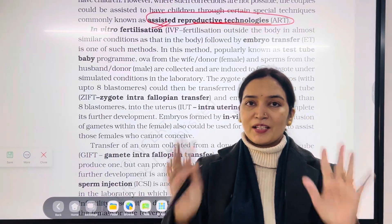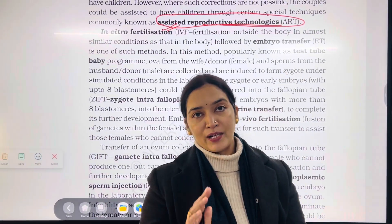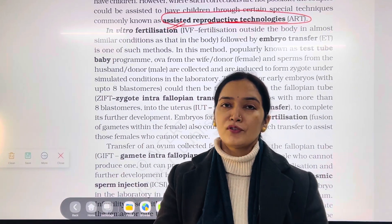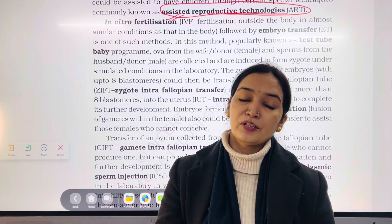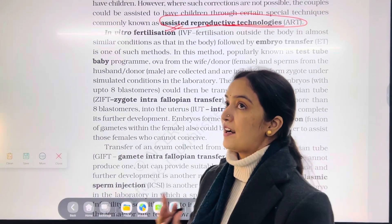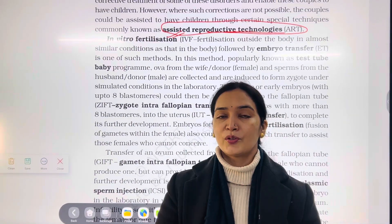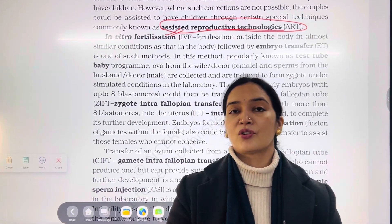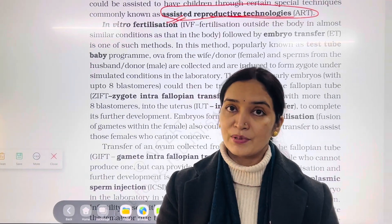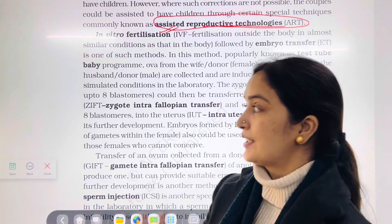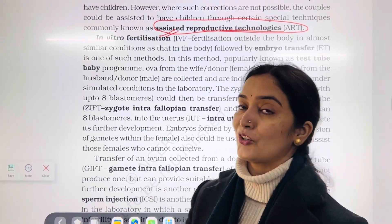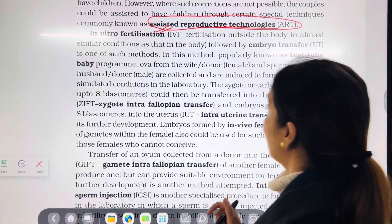Hello students, prepare for our 12th Bio Board exam. There are some full forms that come from Unit 1, Reproduction. Assisted Reproductive Technologies — all these techniques are a boon for childless couples. What are these techniques and technologies that we talk about?